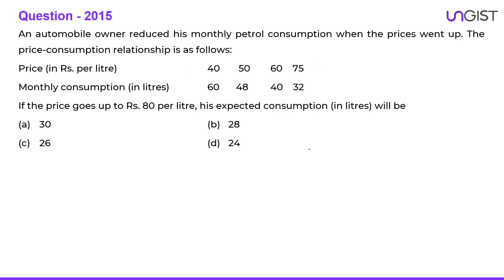In 2015, the question was: an automobile owner reduced his monthly petrol consumption when the prices went up. The price-consumption relationship is as follows. When the price is 40 rupees per litre, his monthly consumption was 60 litres. Just multiply them — this is 2400. So his monthly expenditure was 2400 rupees, because the price was 40 rupees and his consumption was 60 litres per month.